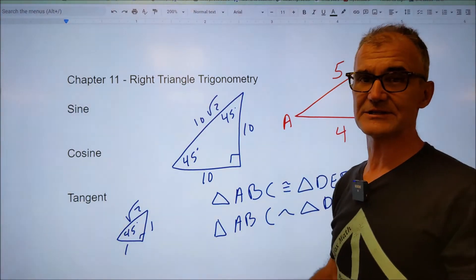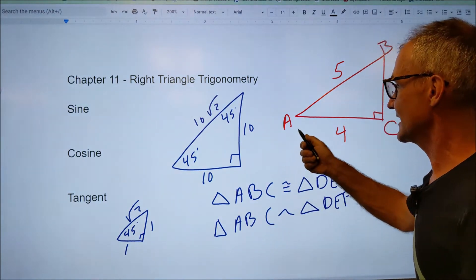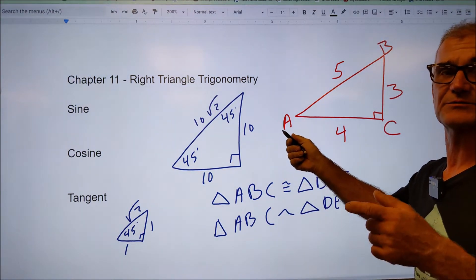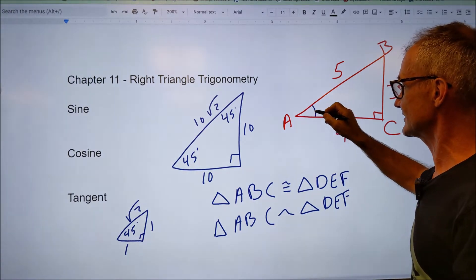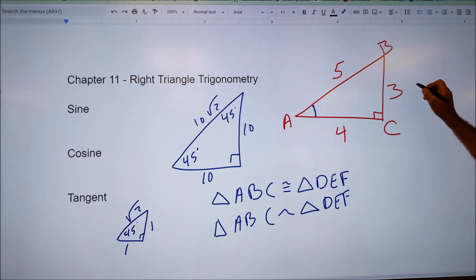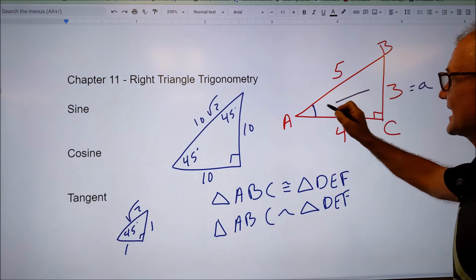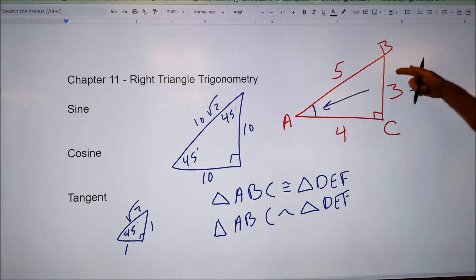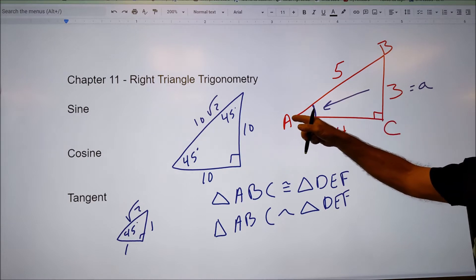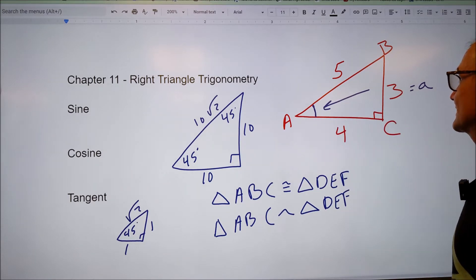A couple other things to really note before we get started is an uppercase letter is always a measure of an angle. So capital A is a measure of this angle here. Lowercase a is always opposite angle a, and the size of this leg is dependent on the size of this angle. That's a big part of trigonometry as well.